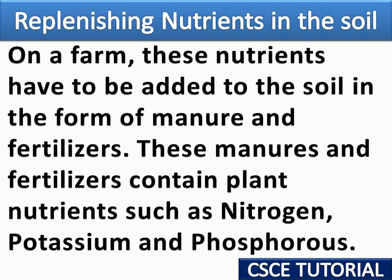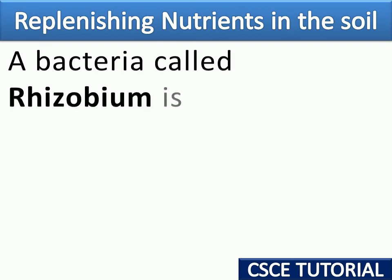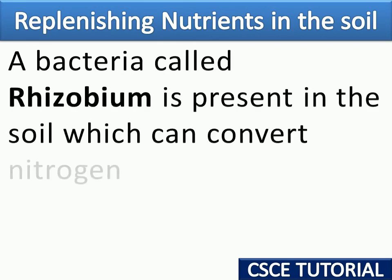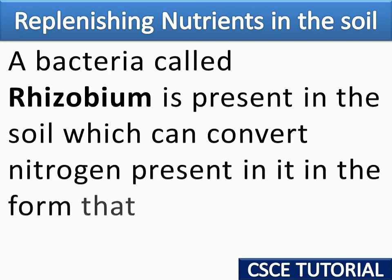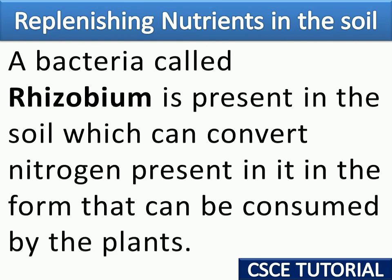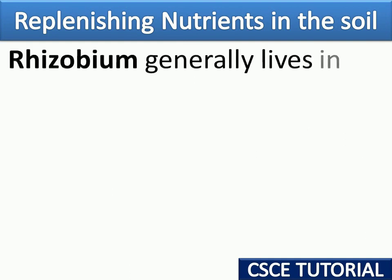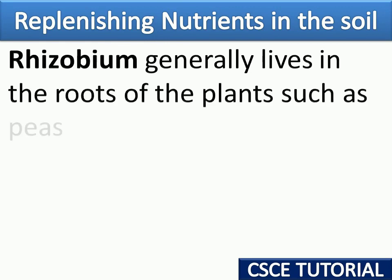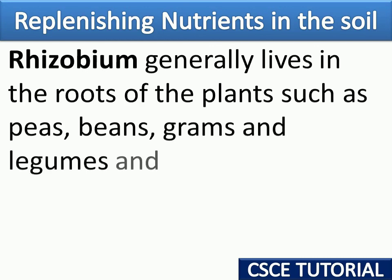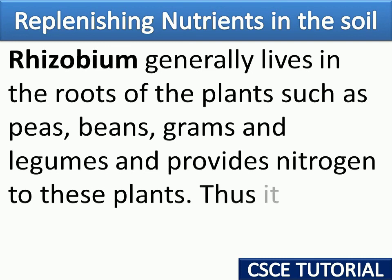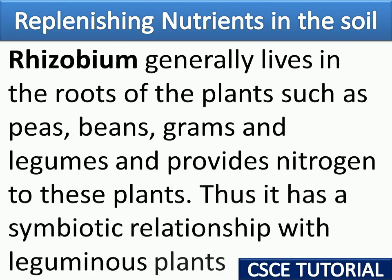The bacteria called Rhizobium is present in the soil and can convert nitrogen present in the soil into a form that can be consumed by plants. Rhizobium generally lives in the roots of plants such as peas, beans, grams, and legumes, and provides nitrogen to these plants. Thus it has a symbiotic relationship with leguminous plants — Rhizobium gets shelter in the roots while the plant receives nitrogen.